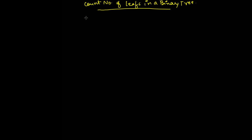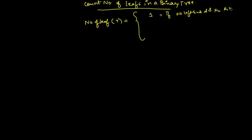We need to write a recursive function for this. The number of leaf nodes for any tree T: if there is no left subtree and no right subtree for a node, it counts as one leaf. Otherwise, the result is the number of leaf nodes in the left subtree plus the number of leaf nodes in the right subtree.